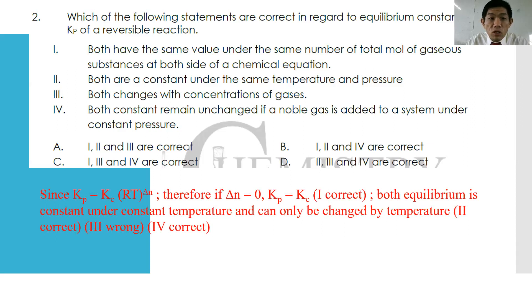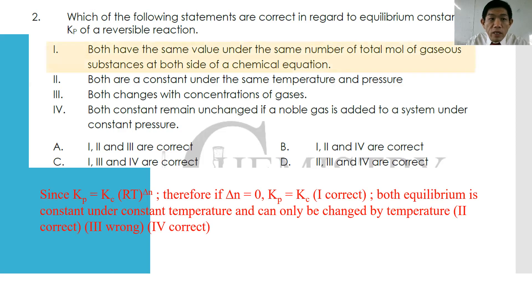Statement three: both change with concentration — which is not true. Statement four: both constants remain unchanged if a noble gas is added to the system under constant pressure. As mentioned, changes in concentration and pressure will not change the equilibrium constants. So statements one, two, and four are true. The answer is B.